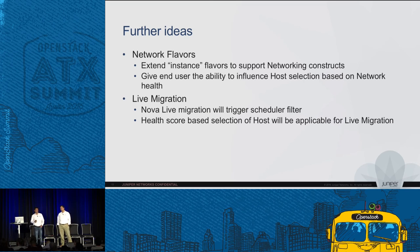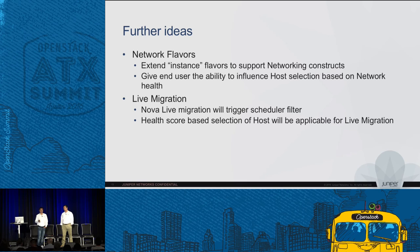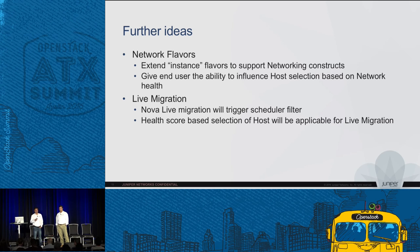We can extend this idea further by making network flavors available to users. This gives the end user a knob to specify the kind of network resources needed for placing their VMs, which can be used as a predicate when the scheduler evaluates compute nodes. Another use case is live migration — if a VM requires a certain kind of network connectivity, the live migration process will also trigger this network-based selection of compute nodes.